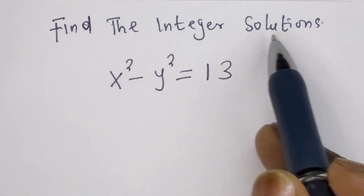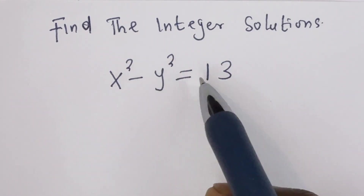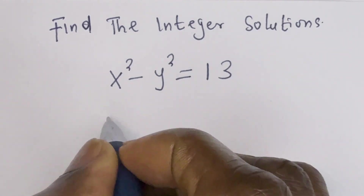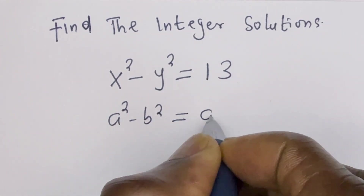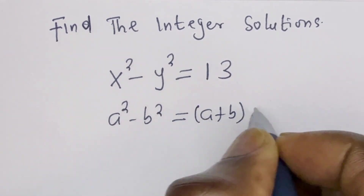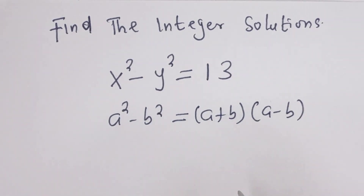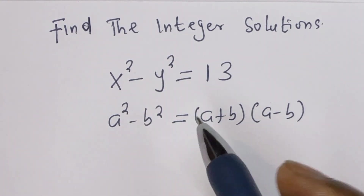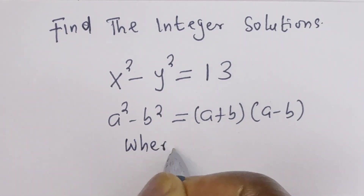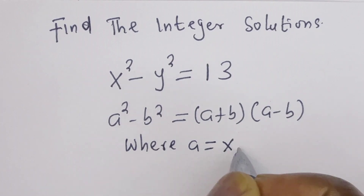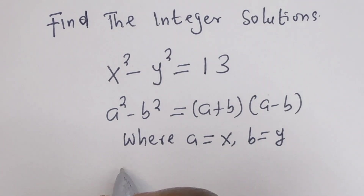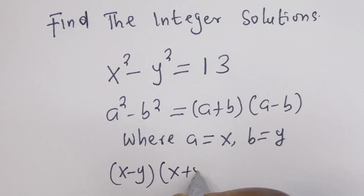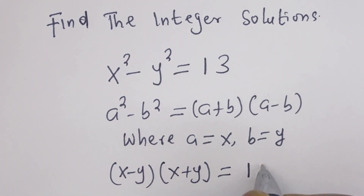Hello. How to find the integer solutions in this problem: x squared minus y squared is equal to 13. Take note that if you have a squared minus b squared, this is equal to (a + b)(a - b), because this is the difference of two squares, where a equals x and b equals y. So we have (x - y)(x + y) = 13.